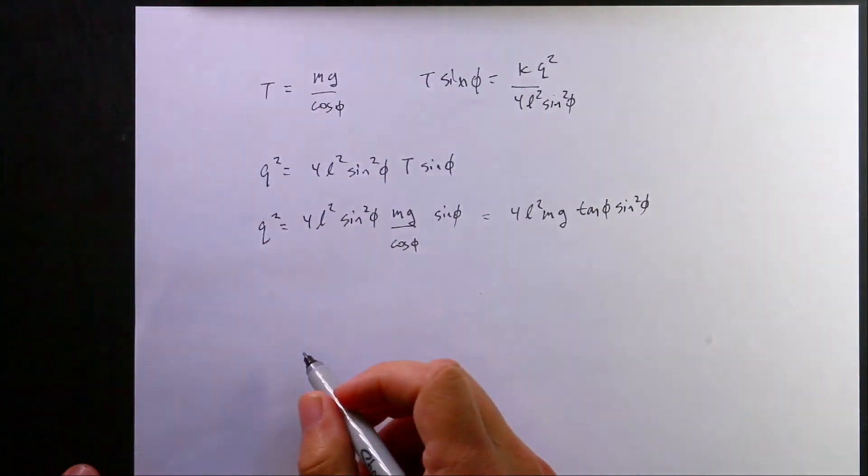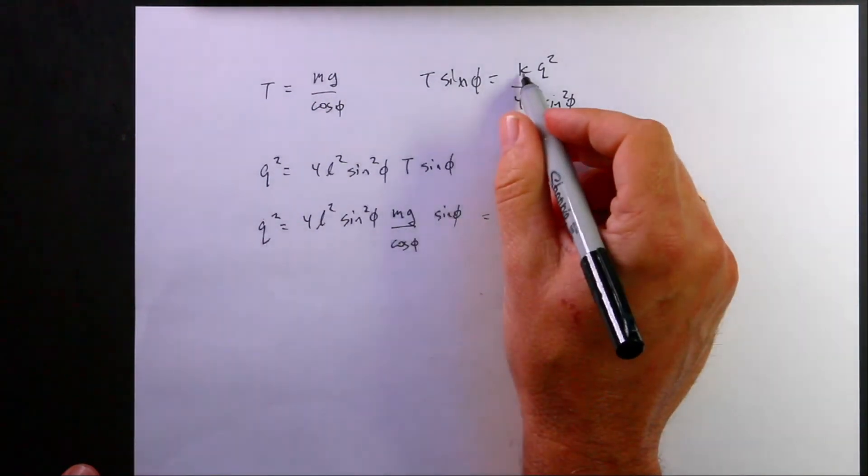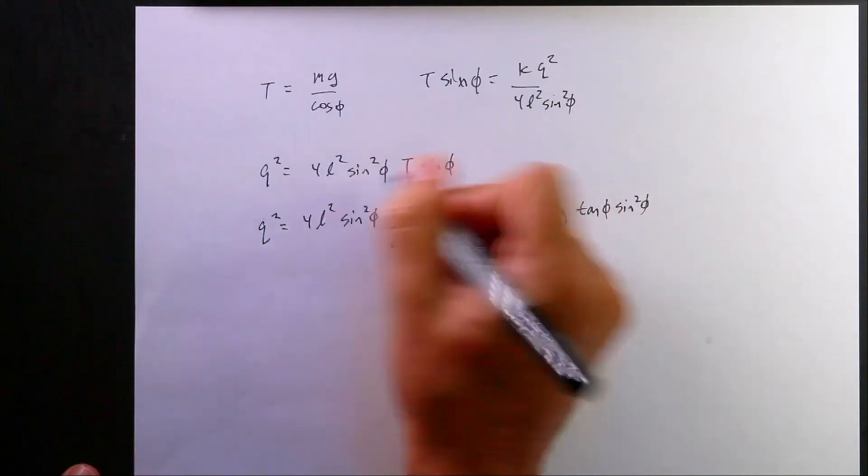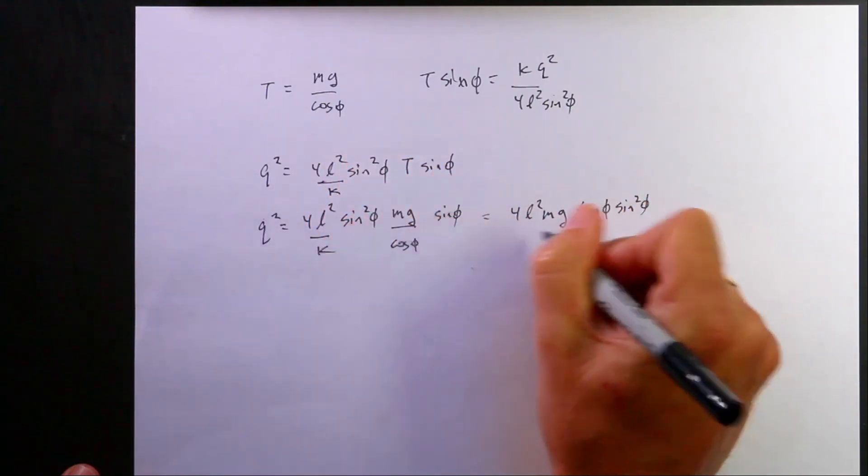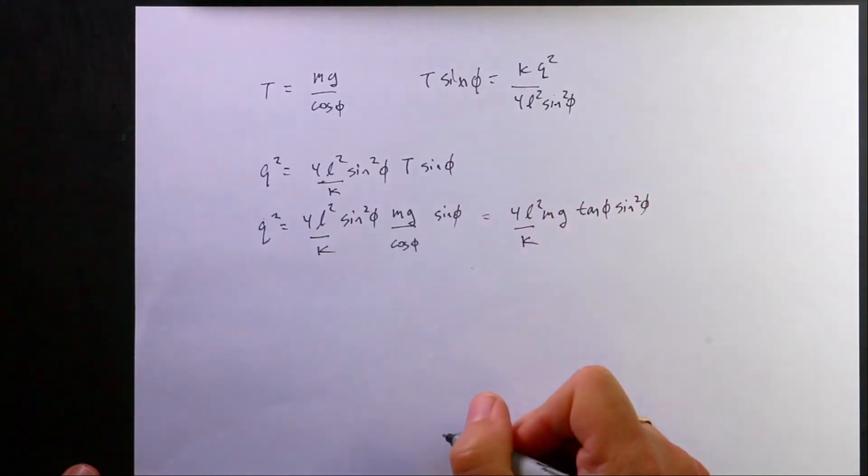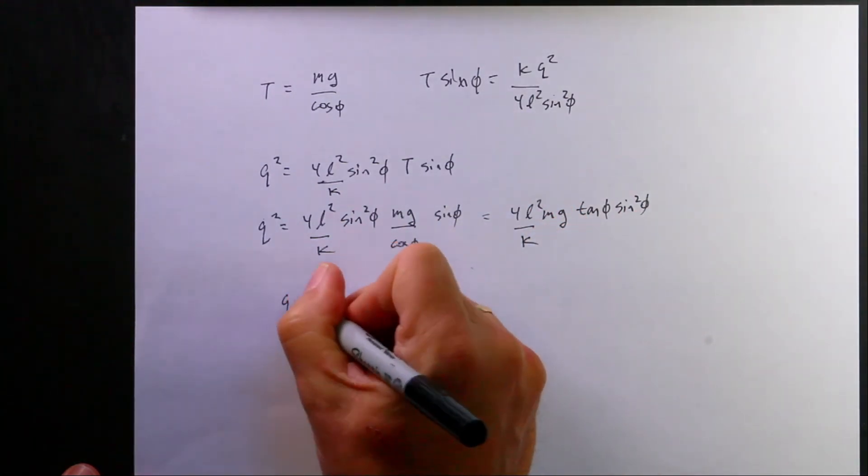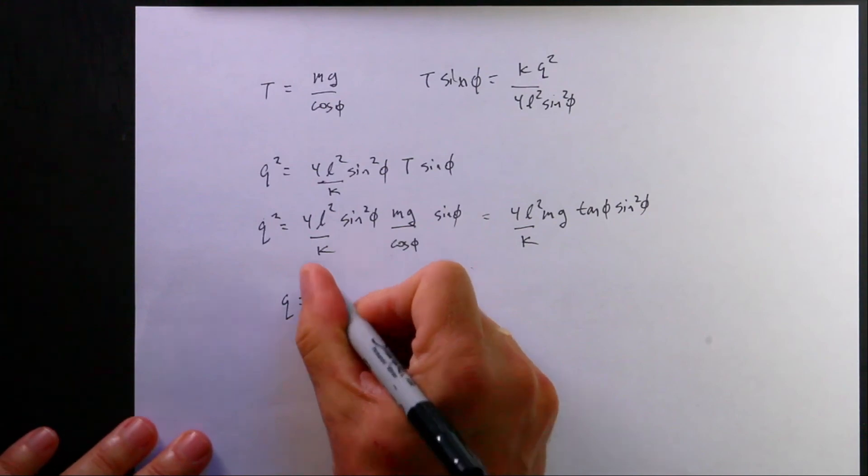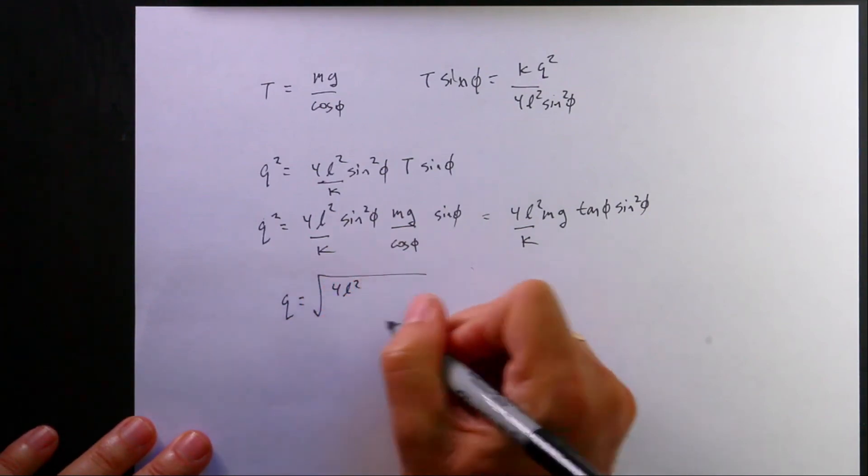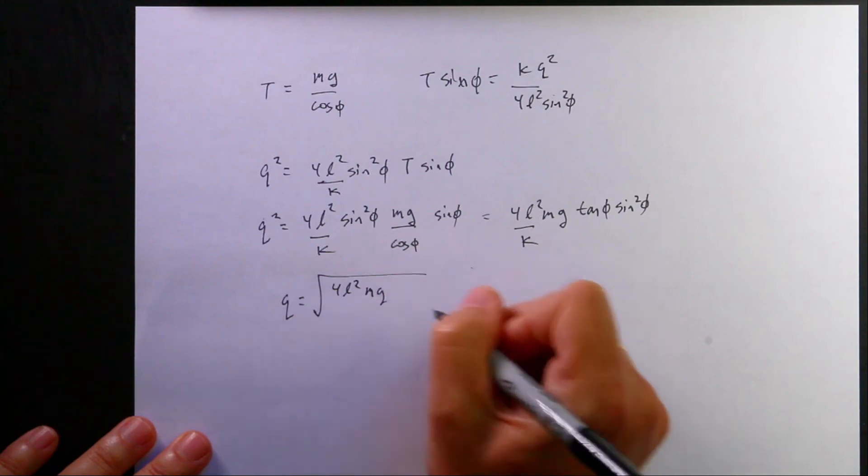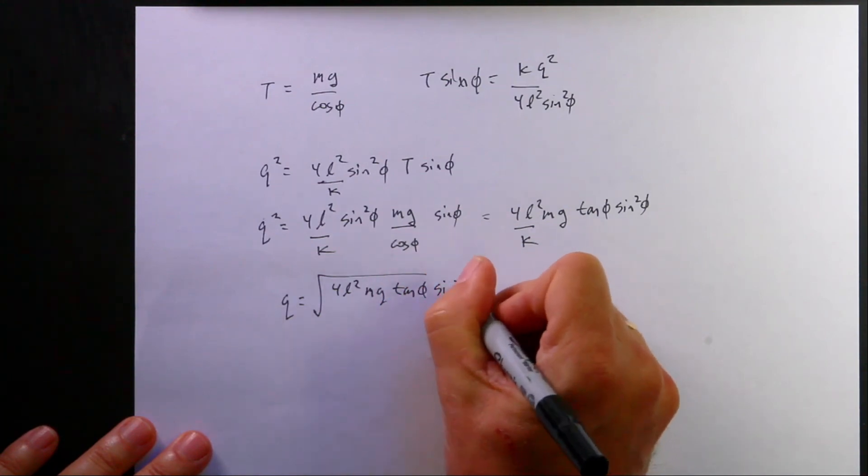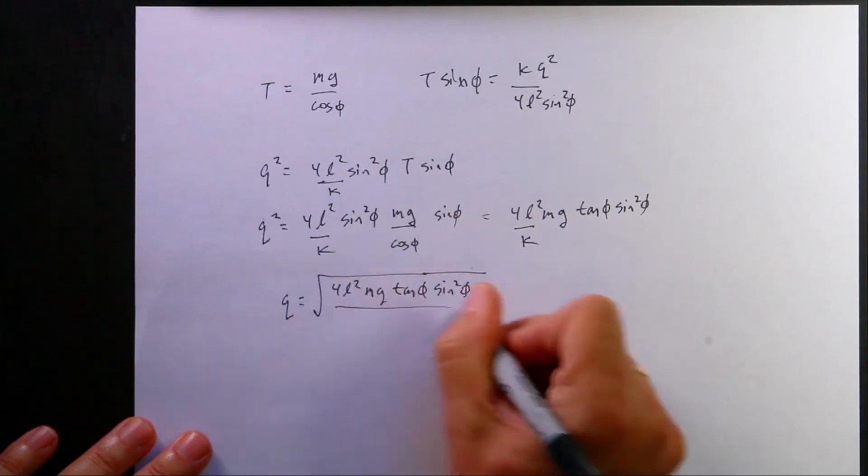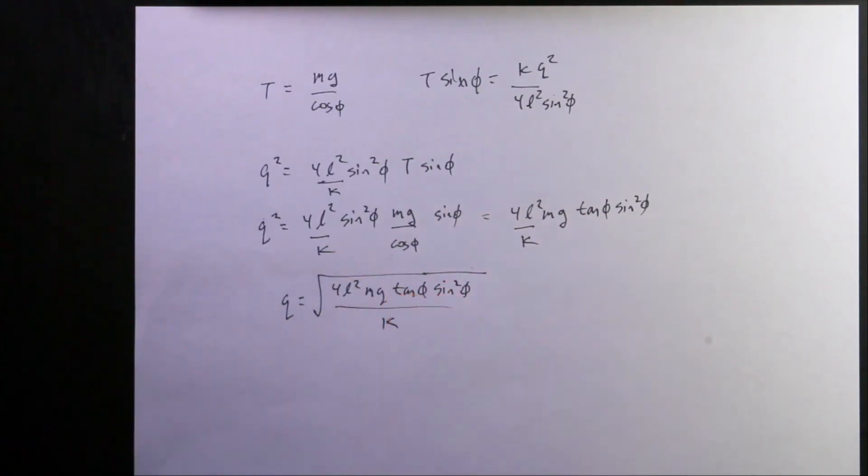Where'd my K go? There's a K. So it should be all of this over K. And then I can take the square root and I get Q equals the square root of 4L squared Mg tangent phi sine squared phi over K. And that's it.